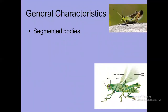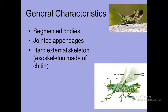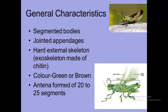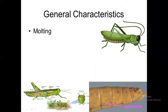Now, general characteristics. Its body is segmented and there are some jointed appendages found in the body. Their body is covered by a hard skeleton called exoskeleton, which is made of chitin. The color is brown or green. They have one pair of antennae, and each antenna is formed of 22 to 25 segments. They have molting power — they can change their body covering, and this process is called molting.